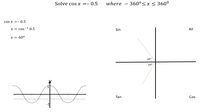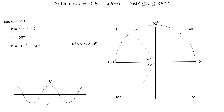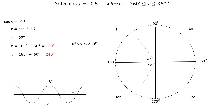Starting with x between 0 and 360 degrees, we go in an anti-clockwise direction. The first angle is at 180 minus 60 degrees, which is 120 degrees. The next angle is at 180 plus 60 degrees, which is 240 degrees.